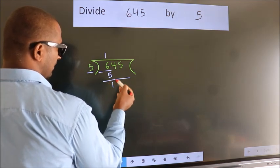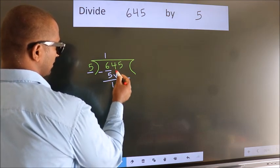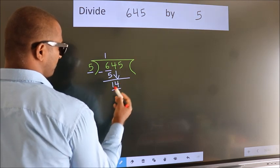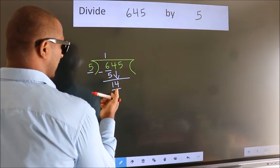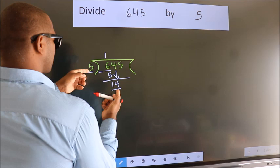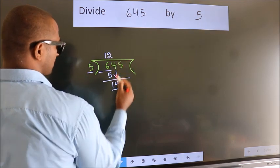After this, bring down the beside number. So, 4 down. So, 14. A number close to 14 in 5 table is 5 twos, 10.